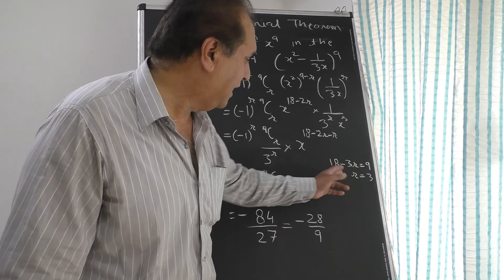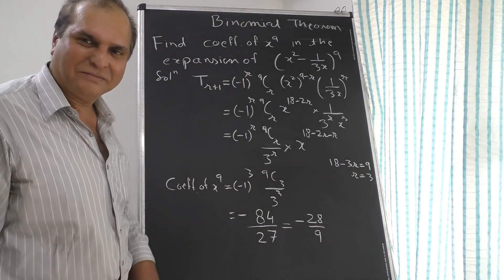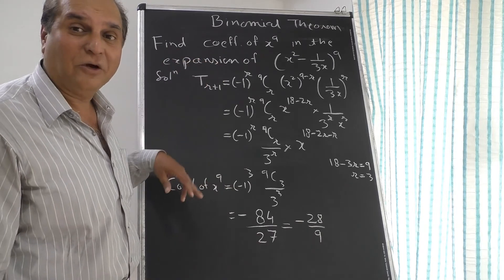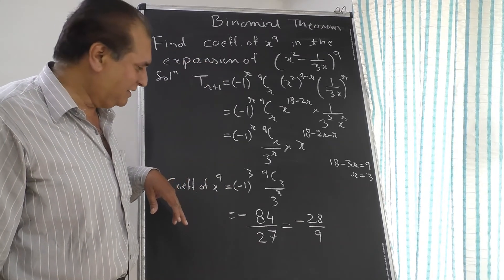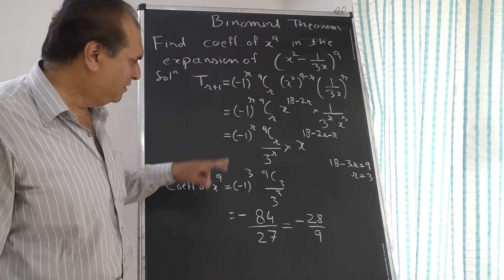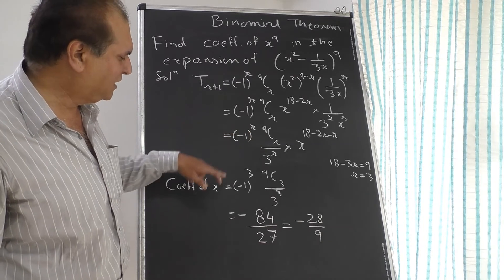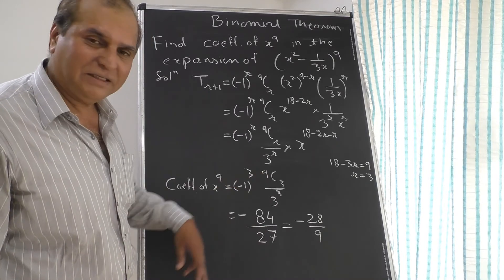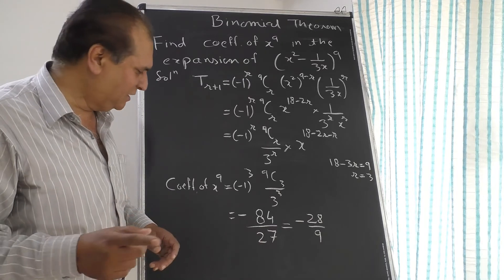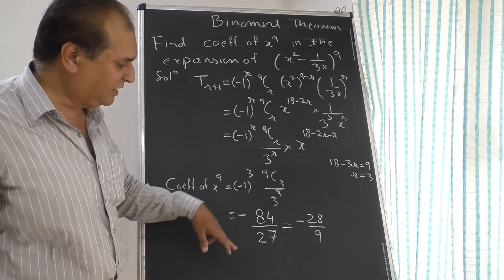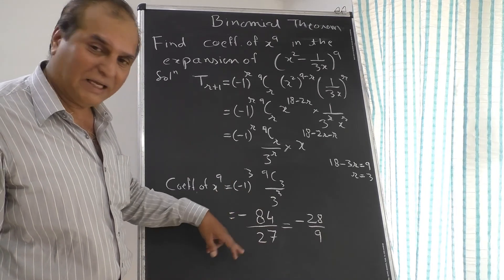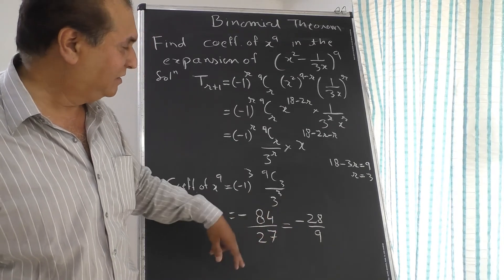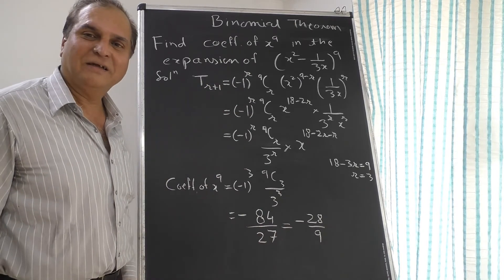So 3r equals 9, giving r equals 3. Now we find the coefficient: (-1)^3 — since 3 is odd, the sign is negative. Then 9C3 equals 9 × 8 × 7 upon 3 × 2 × 1, which comes to 84. And 3^3 equals 27. Cancelling the common factor of 3 from 84 and 27 gives minus 28 upon 9. That is the coefficient of x^9 in this expansion.